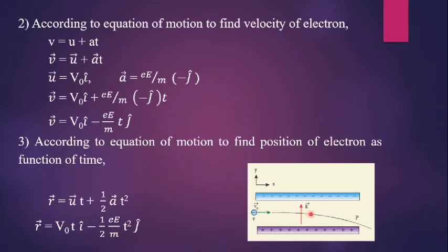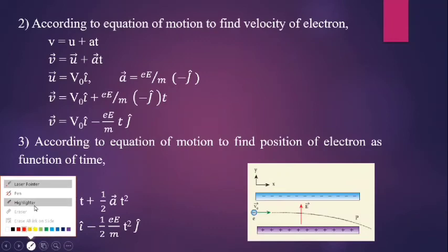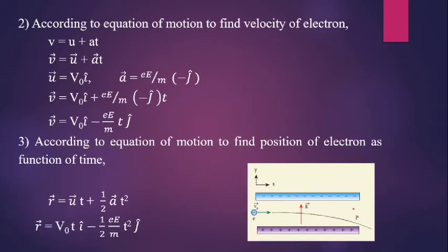Here we can see where the electron is at any given time. Drawing a simple coordinate system with x and y axes, the electron moves in the positive x direction due to v0, while the uniform electric field attracts it toward the positive plate, deflecting it in the downward direction along negative y.